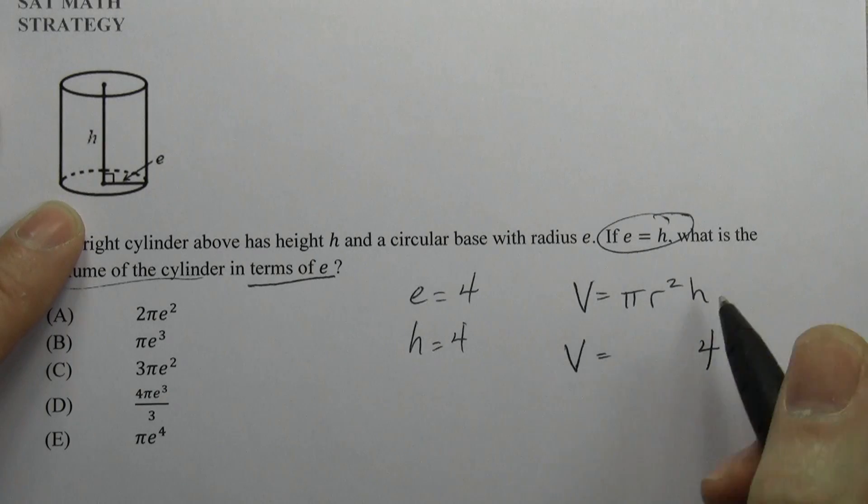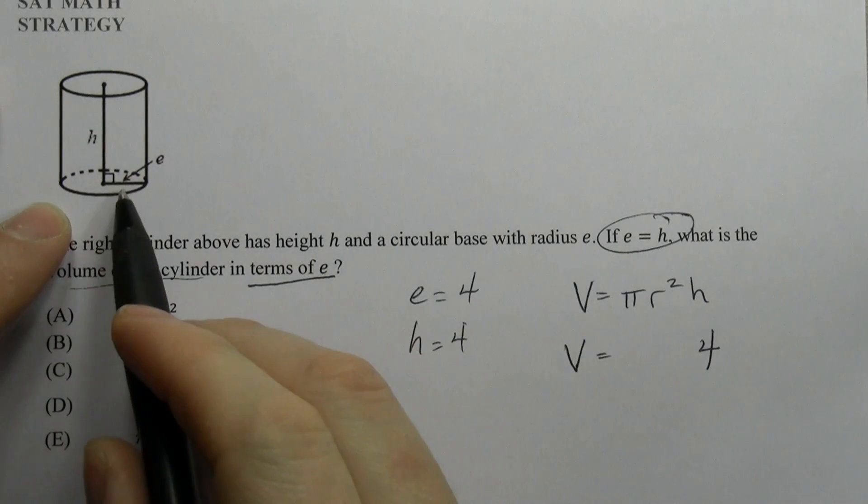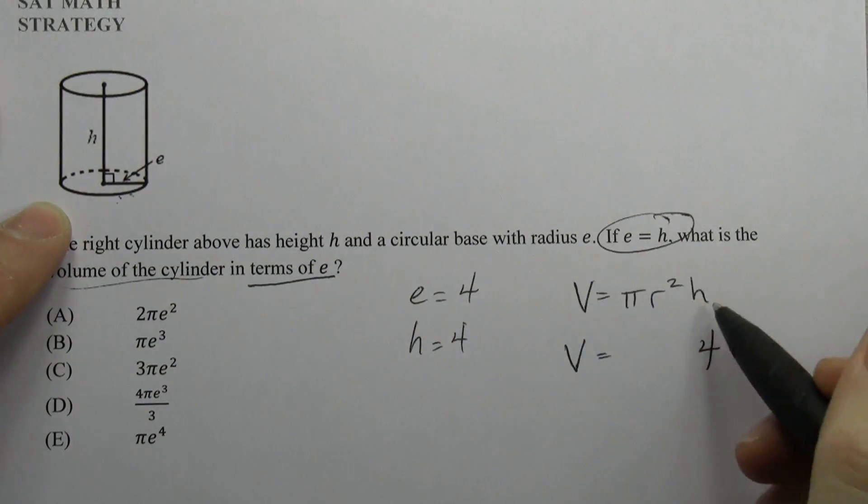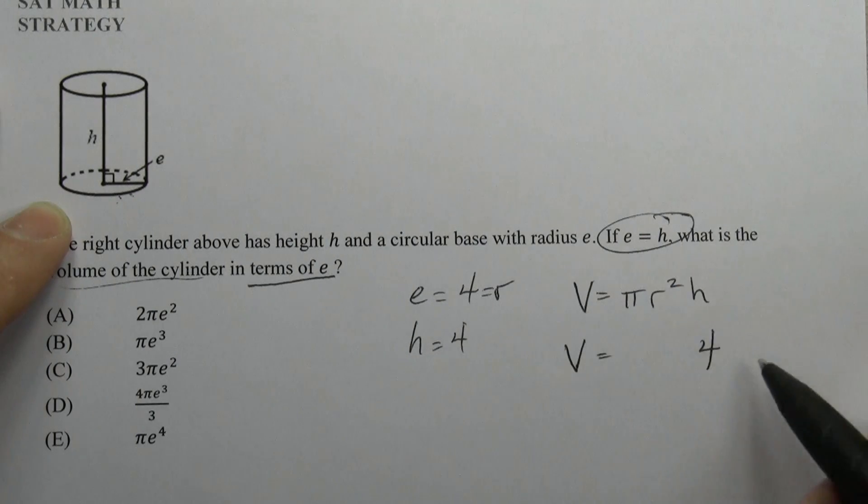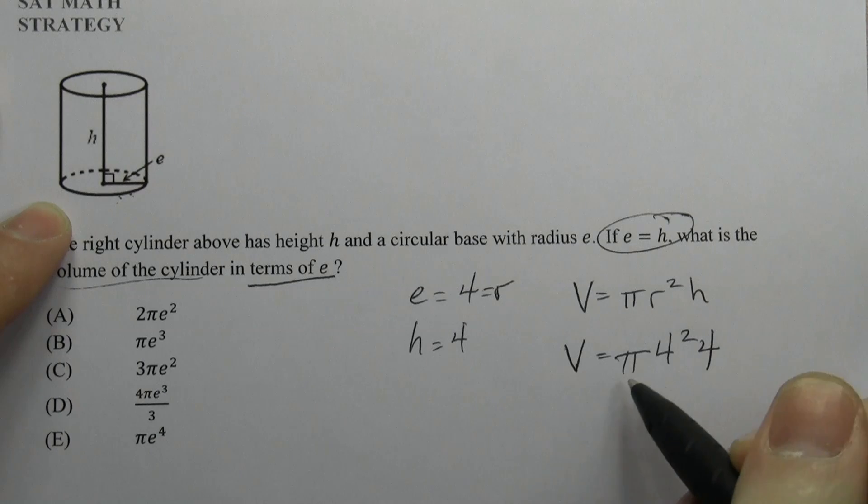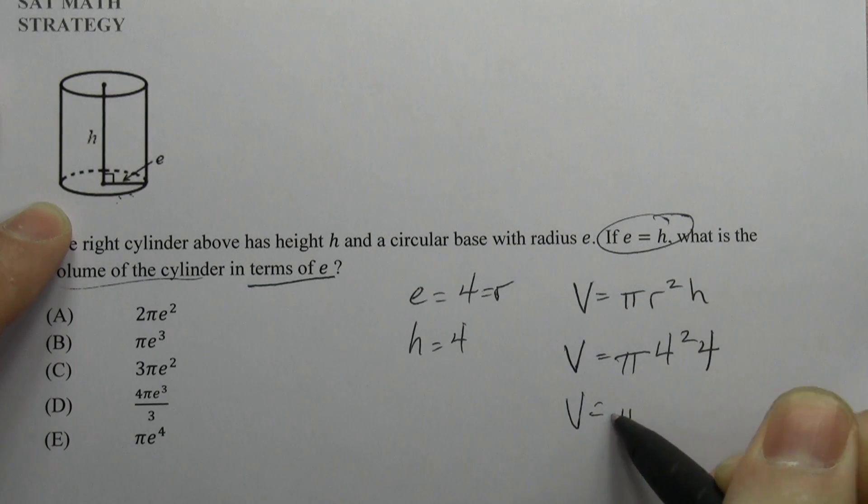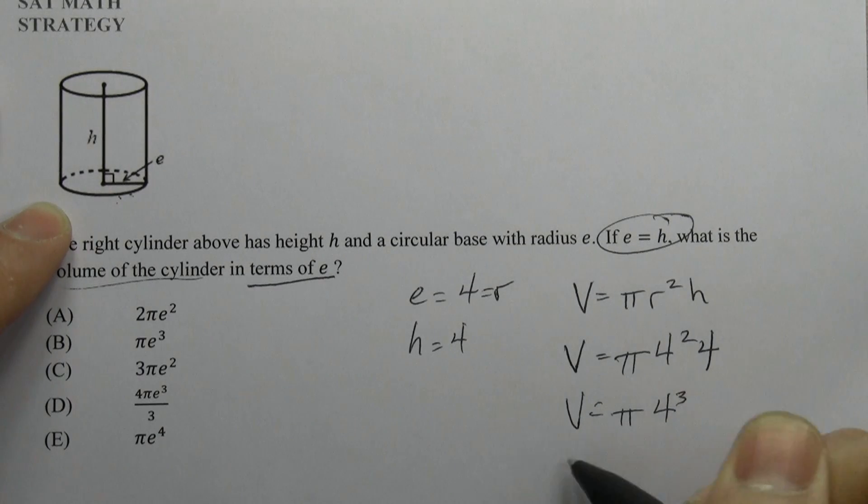We don't have r, but we just said before that r is really e, so we can replace that. So we have 4² and π. So volume is π × 4³. Volume is 64π.